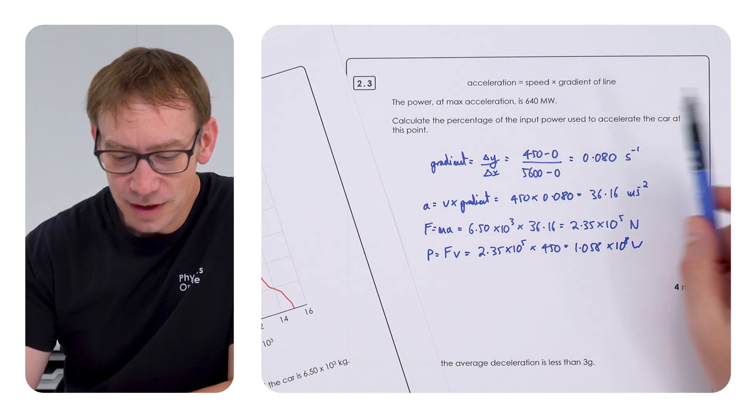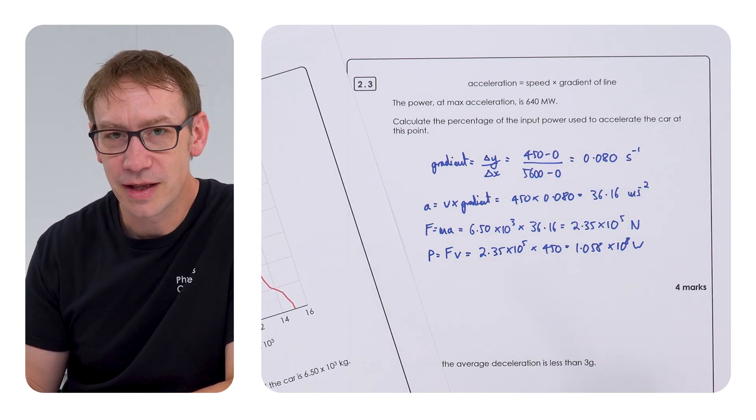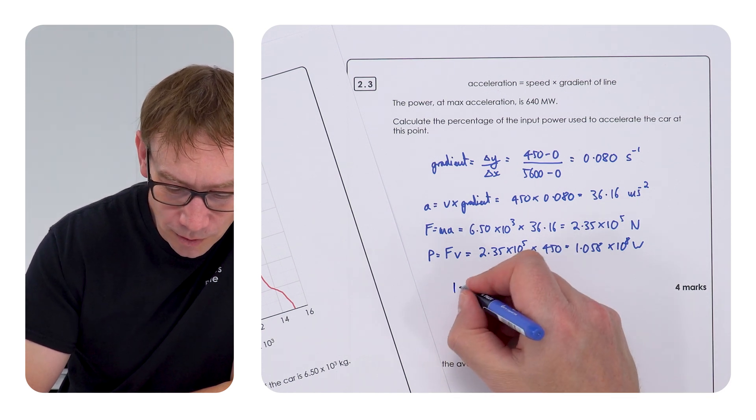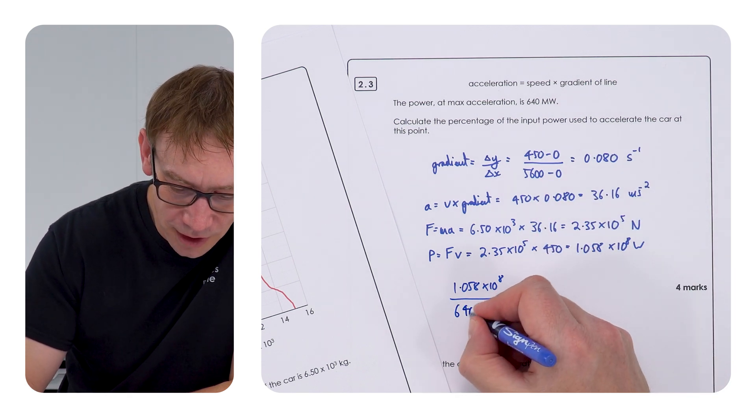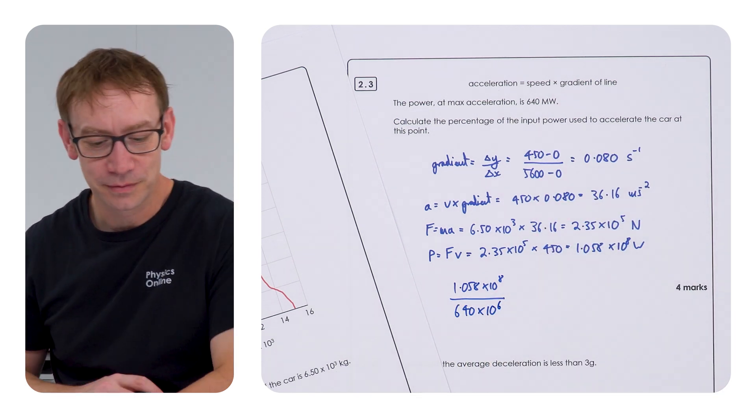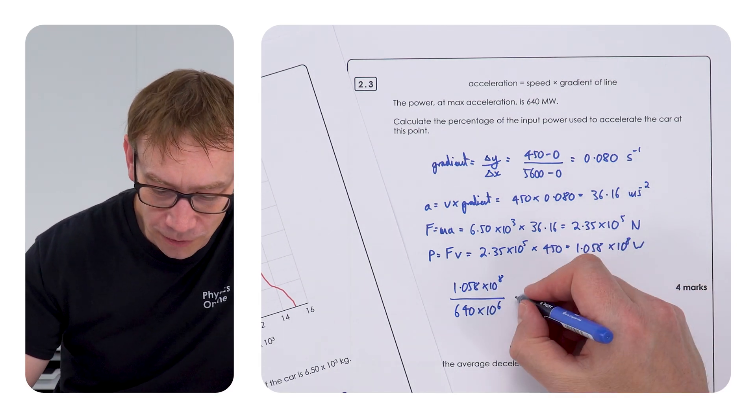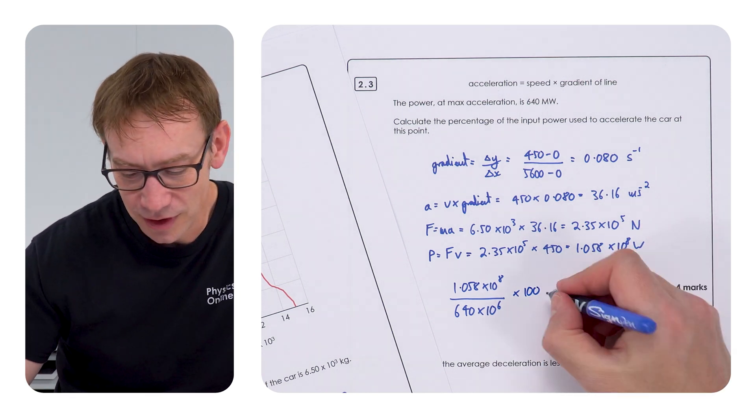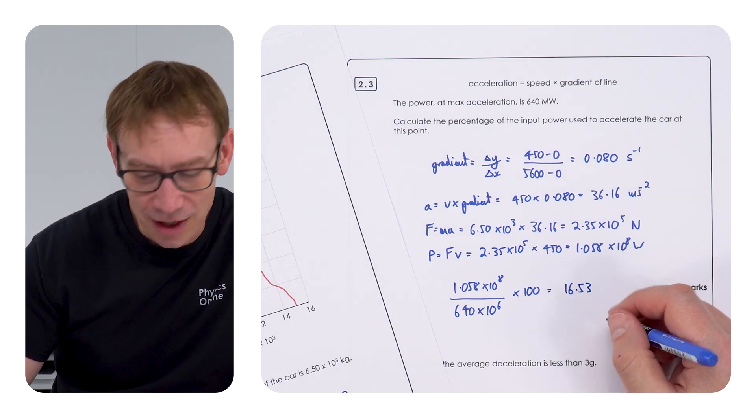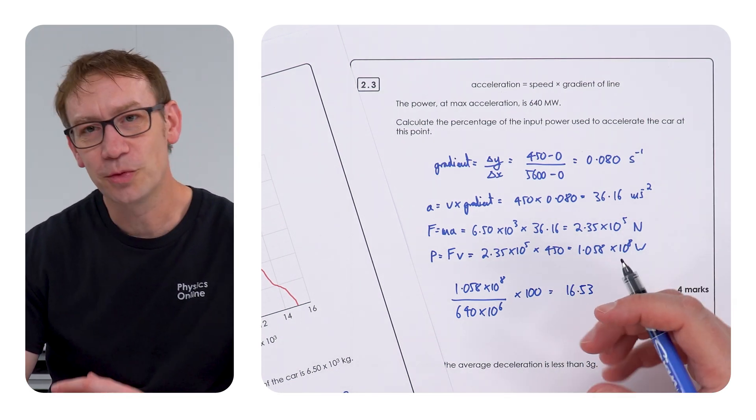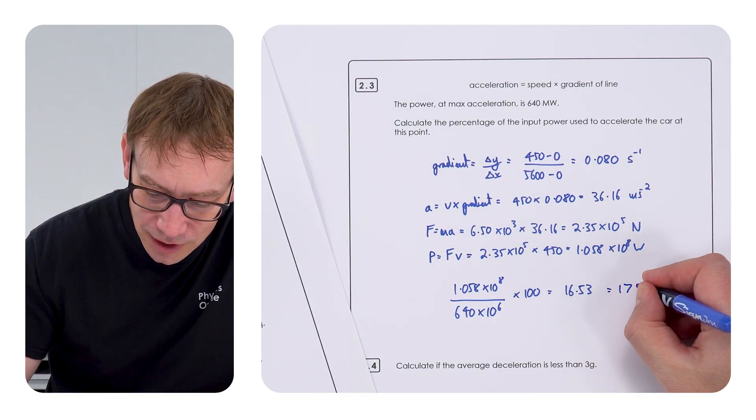Now we want to look at, because this is the amount of the input power used to accelerate the car, what percentage is this number of that number over there? Well, the percentage is going to be equal to 1.058 times 10 to the 8, divided by 640 times 10 to the 6. Well, I guess that's pretty much 1.058 divided by 6.40. And then, of course, we're going to multiply that by 100 to get it as a percentage. And when you do that, again, using your calculator, this is equal to 16.53, which I guess, to two significant figures, which is all you can really look at when we're looking at the data to work out the gradient of the line at this point, this is equal to 17%.